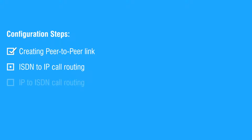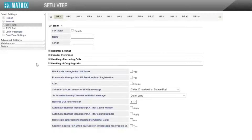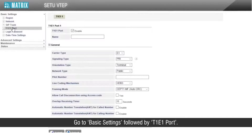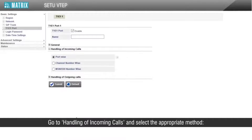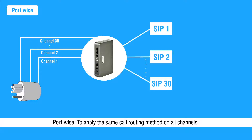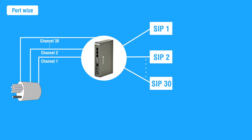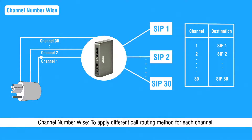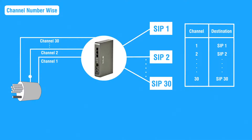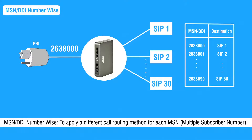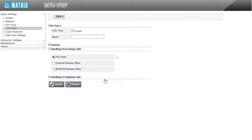Let us start with the second step. Go to Basic Settings followed by T1E1 Port. Go to handling of incoming calls and select the appropriate method. 'Port-wise' applies the same call routing method on all channels. 'Channel number-wise' applies different call routing methods for each channel. 'MSN or DDI number-wise' applies a different call routing method for each MSN, i.e., multiple subscriber number. We will select port-wise routing.